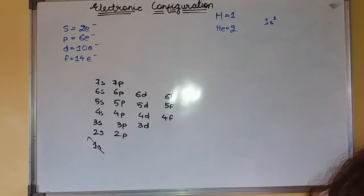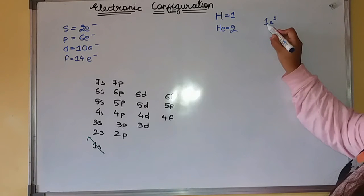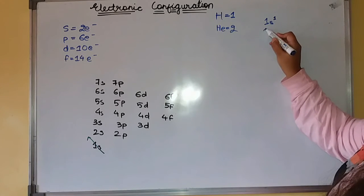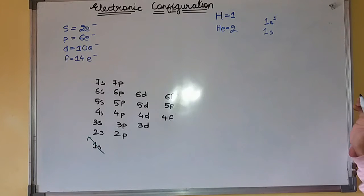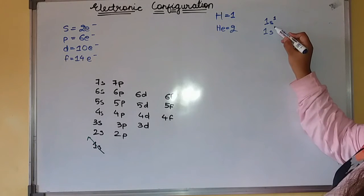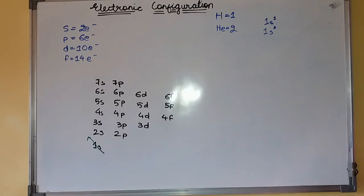What you might have done is that you might have written down 1s. And since this s has capability of filling up 2 electrons, so you would have written here 2.